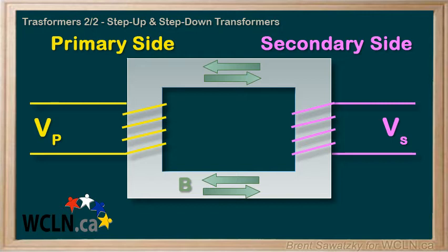So the question is, how do we make a transformer that can step up or step down the voltage? Well, it all comes down to the number of coils on each side of our transformer.